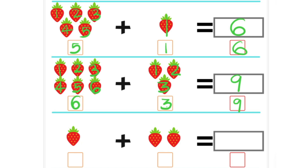Now next one. 1. So left side there is only 1 strawberry. And right side there are 2: 1 and 2. So let's count all together: 1, 2 and 3. So 1 plus 2 is equal to 3 strawberries. So we can write 1 plus 2 is equal to 3.